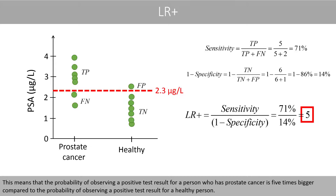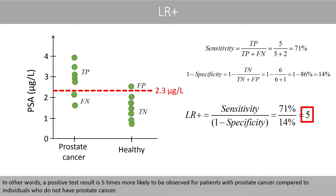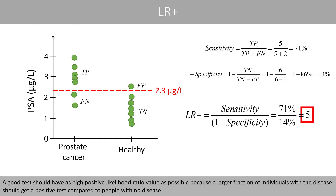This means that the probability of observing a positive test result for a person with prostate cancer is 5 times bigger compared to the probability of observing a positive test result for a healthy person. In other words, a positive test result is 5 times more likely to be observed for patients with prostate cancer compared to individuals who do not have prostate cancer. A good test should have as high a positive likelihood ratio value as possible, because a larger fraction of individuals with the disease should get a positive test compared to people with no disease.